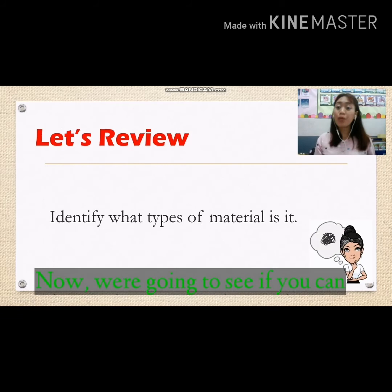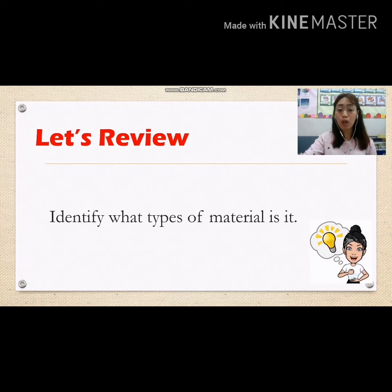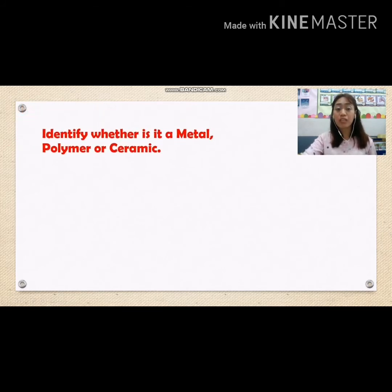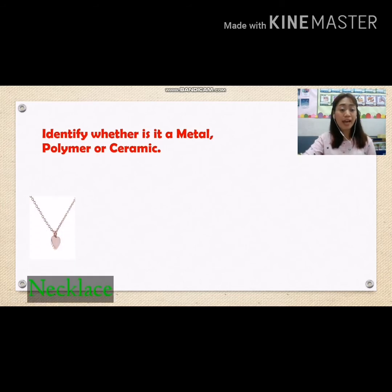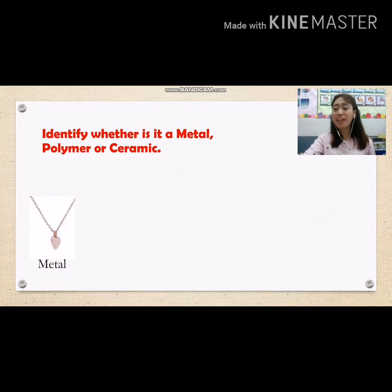Now we are going to see if you can identify the different types of materials. Identify whether it is metal, polymer, or ceramic. We have necklace — the answer is metal. Very good!